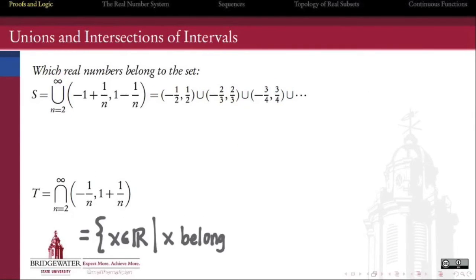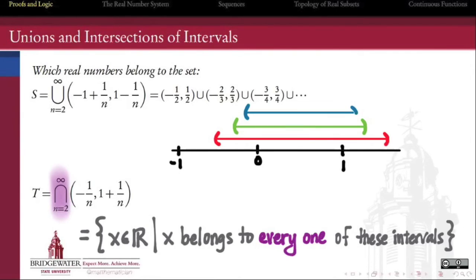Similarly, if we had an intersection instead of a union, the intersection would contain the elements belonging to every one of the listed intervals.